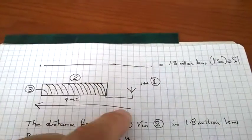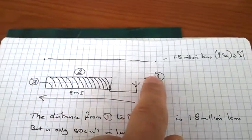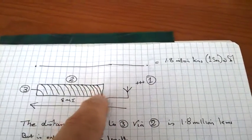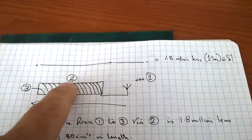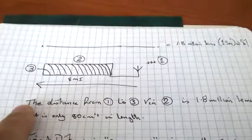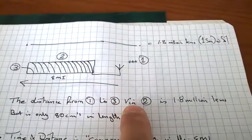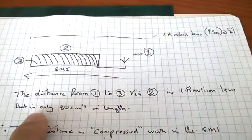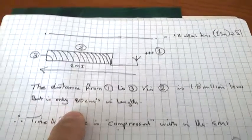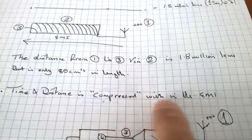If you took this one second and wrapped it around a tube, the ions come across an antenna and are held in time until they come out the other end. So we can quietly say the distance from 1 to 3 via 2 is 1.8 million kilometres, but it's only 80 centimetres in length. Therefore, time and distance is compressed within an EMI.